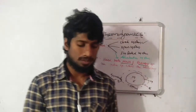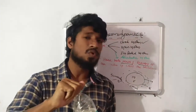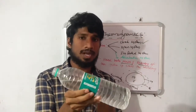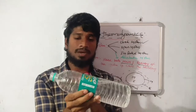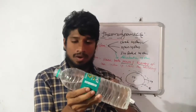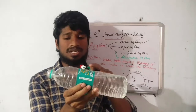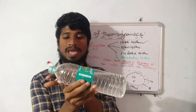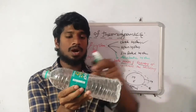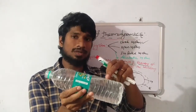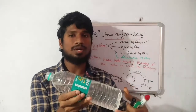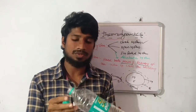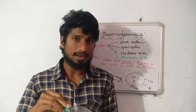Consider the same water bottle example, but now it has one open end and is filled with hot water. After some time, the water will exit from the system, and also the hotness of the water transfers to the surroundings. So these types of systems are called open systems. This is only for understanding purposes.